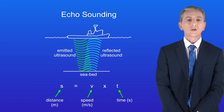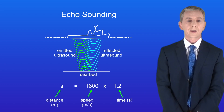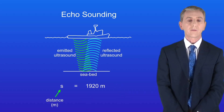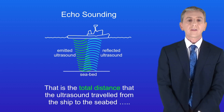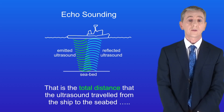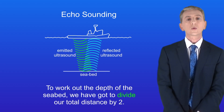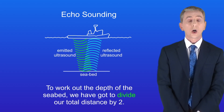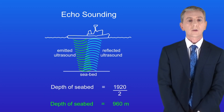We use the equation distance equals speed multiplied by time. The speed of ultrasound in water is 1600 meters per second and the time is 1.2 seconds. This gives us a total distance traveled by the ultrasound of 1920 meters. However, that's the total distance the ultrasound traveled from the ship to the seabed and back to the ship. So to work out the depth of the seabed we divide the total distance by two, giving us a depth of 960 meters.